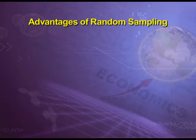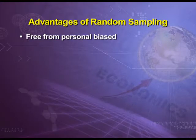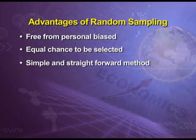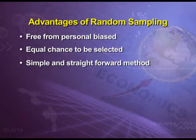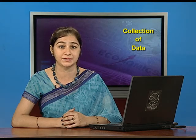There are certain advantages of random sampling. The first advantage is it is free from personal biasness, because the instructor is not having any personal link or biasness towards the respondents. The second advantage is equal chance to be selected — each and every item has equal probability to be selected. The third advantage is it is a simple and straightforward method involving random selection of the sample. The most important demerit is that it does not give weightage to certain important items in the universe.